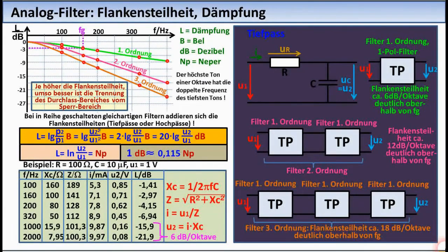For a first-order low-pass, this circuit here with a resistor of 100 ohms and a capacitor of 10 microfarads and an input AC voltage of one volt, the frequency response curve is to be calculated. That is, the course of the attenuation as a function of frequency is to be determined. The formulas necessary for this can be seen here.